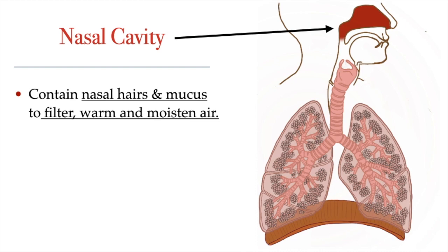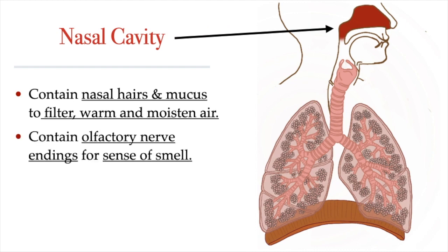The many blood vessels in the nasal cavity are actually the reason why nosebleeds are so common. And the mucus-producing cells are the reason why we get a runny nose. The nasal cavity also serves a function unrelated to gas exchange. Up on the roof of the nasal cavity is the olfactory epithelium. The nasal cavity contains olfactory nerve endings with receptors that are sensitive to odor molecules. When those molecules attach to the receptors in our olfactory nerves, we detect that as a smell.